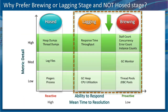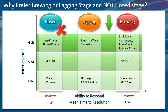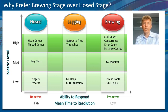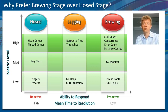Why do we prefer the brewing or lagging stage and not the host stage? When you are monitoring your applications with CA APM, it would be ideal to catch any performance issue in the brewing stage, instead of when the problem is already impacting end users, as in the host stage.